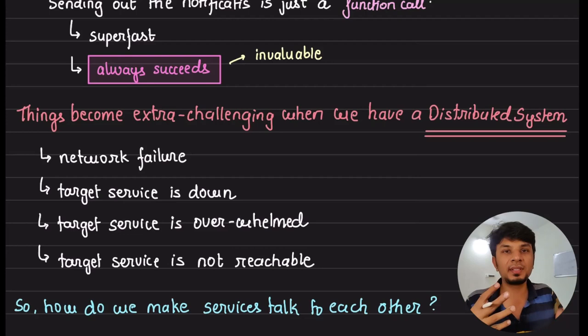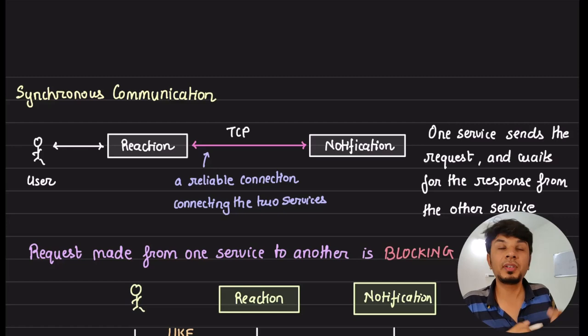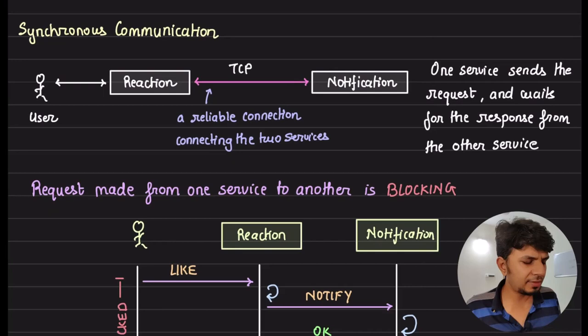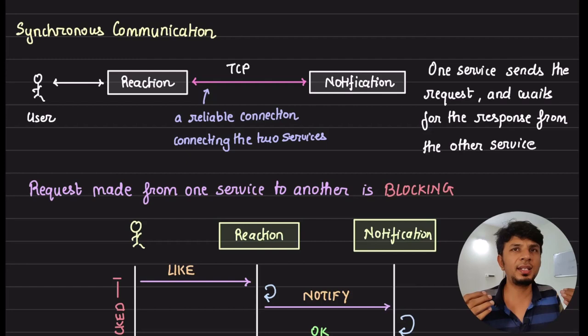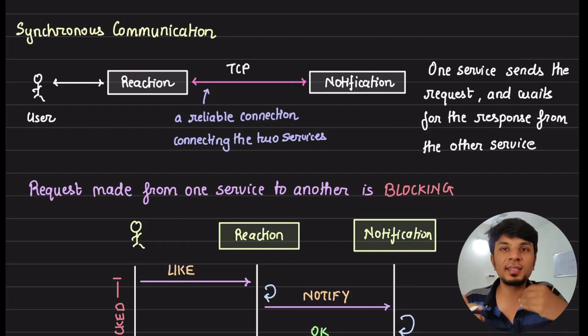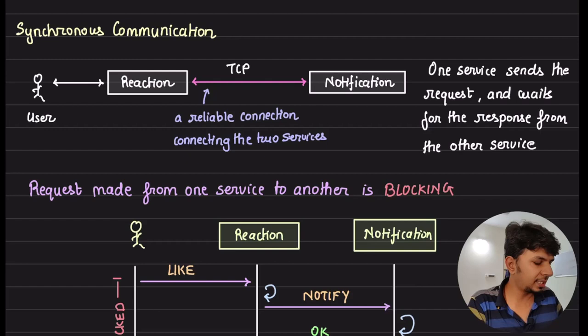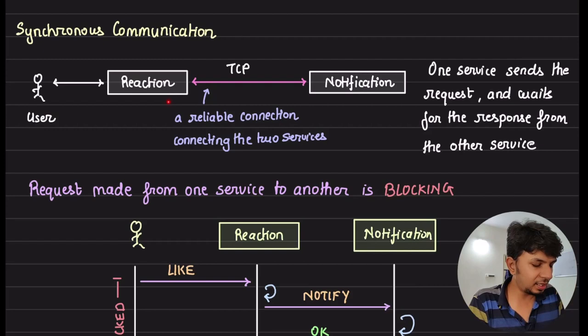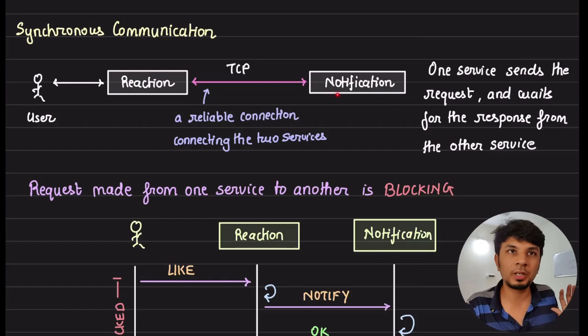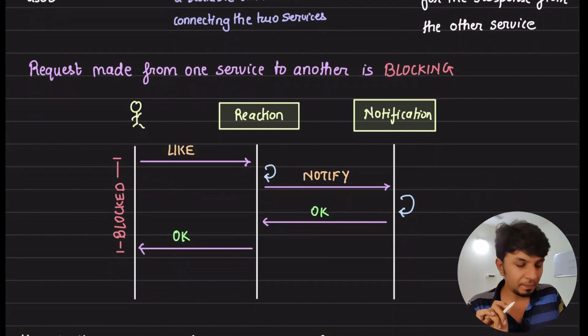The first category of communication pattern is synchronous communication. It's one of the simplest ways to establish communication between two services — as simple as making an API call or doing a synchronous transaction. For example, when a user reacts to a post, the reaction service, after registering it in its database, will synchronously invoke the notification service's API endpoints to send out the notification.